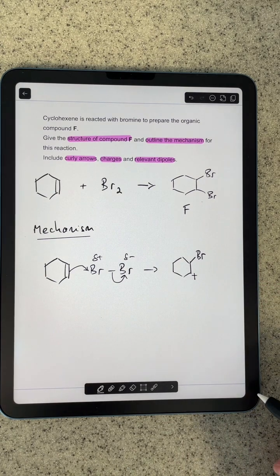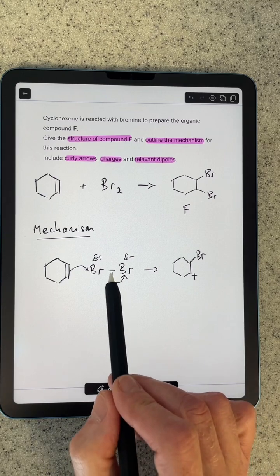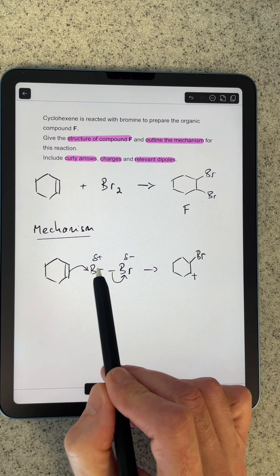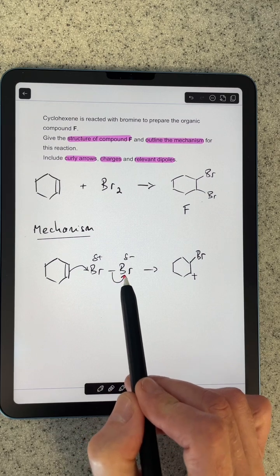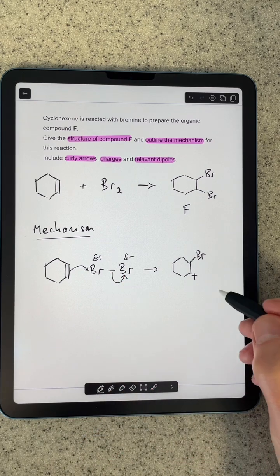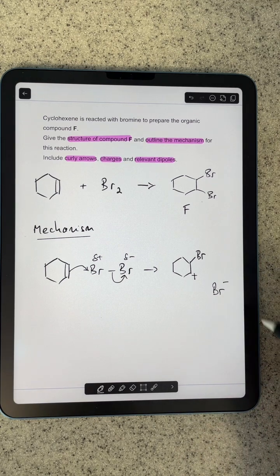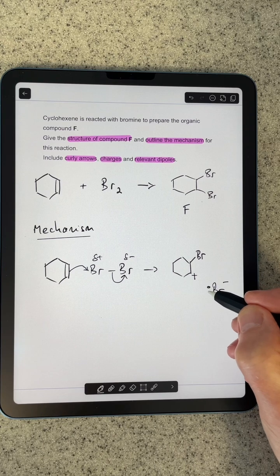The bromine, when it breaks off, has effectively gained an electron. It owned one of the electrons in the bond, didn't own the other one—it belonged to that bromine. So it's gained that electron and is now a Br⁻ ion. For the purpose of the mechanism, I'm going to put a pair of electrons on there.